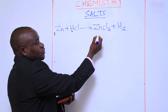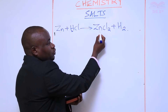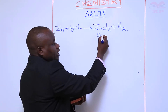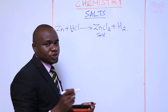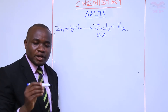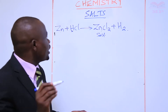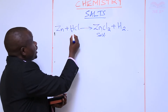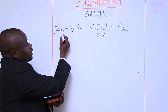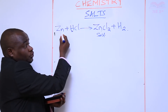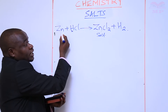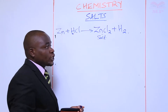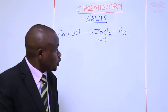So the hydrogen ion in the acid has been replaced by the positive ion, which is zinc. As a result, the product formed is called zinc chloride, and this zinc chloride is what we call a salt. So from the definition, a salt is a compound formed when the hydrogen ion from the acid is replaced by a positive ion or a metal.